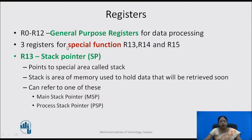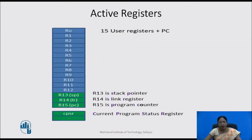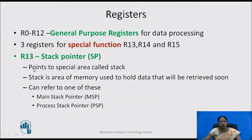There are three registers used for special functions: R13, R14 and R15. R13 is the stack pointer SP. This SP points to a special area of memory called the stack. The stack is the area of memory used to hold data that will be retrieved soon. The stack pointer can refer to the main stack pointer MSP or process stack pointer PSP.